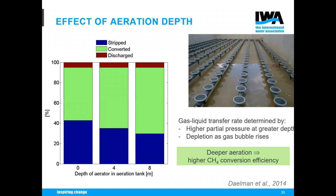Finally, we investigated the effect of depth of the aeration equipment, comparing surface aeration (0 m), regular depth (4 m), and deep reactor (8 m). The equation accounts for counteracting effects: higher partial pressure at greater depths increases solubility of methane and oxygen, but gas depletion as the bubble rises reduces available oxygen. Overall, deeper aeration results in less methane stripping and higher methane conversion efficiency.